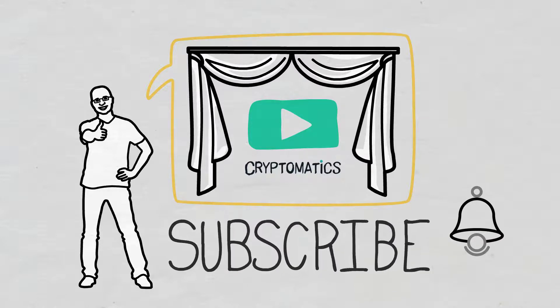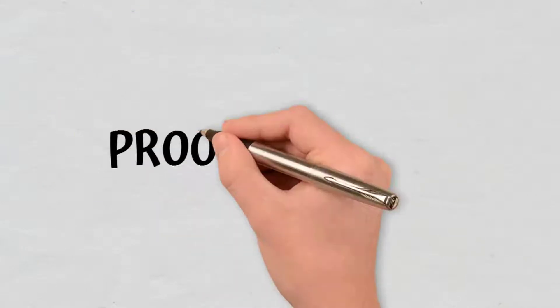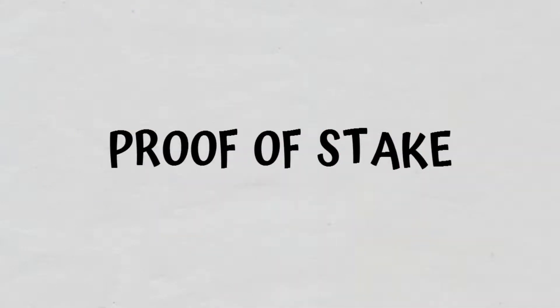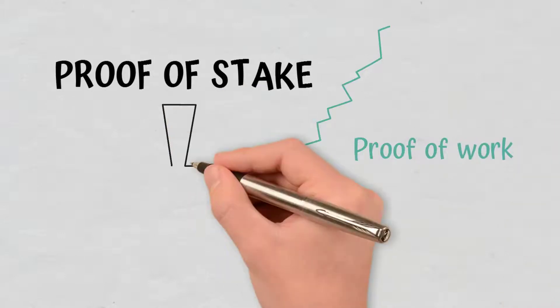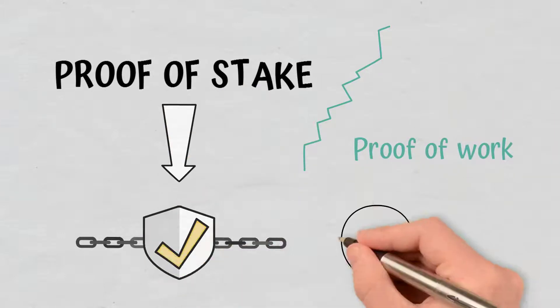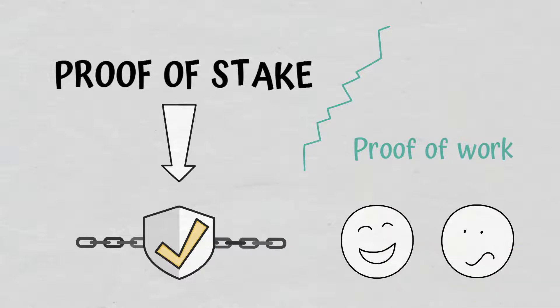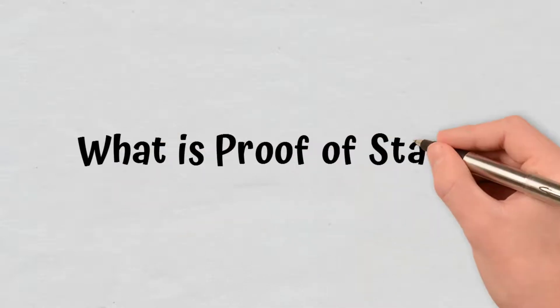Today, I will explain what the consensus mechanism proof-of-stake is, the differences between it and proof-of-work, what role it plays in a blockchain, plus its advantages and disadvantages.